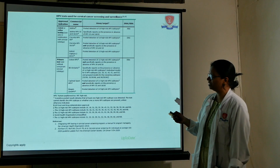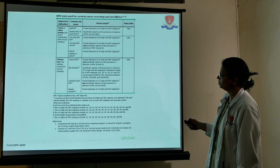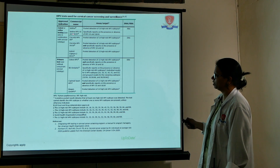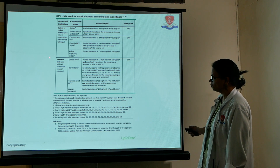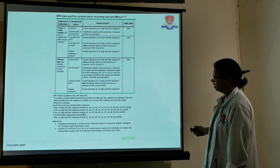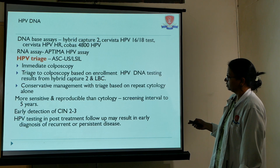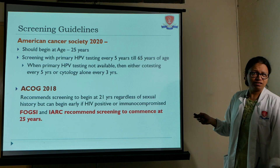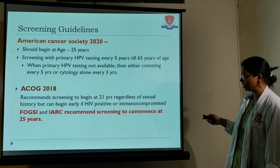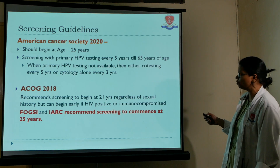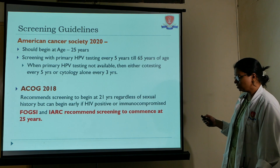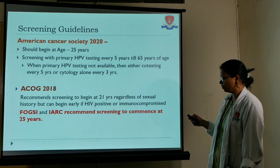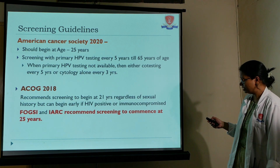HPV testing includes self-testing and co-testing (HPV combined with cervical cytology). Commercial tests include Aptima, Cobas, Cervista, and Hybrid Capture 2. Primary HPV-only testing includes Cobas HPV and Onclarity HPV. Screening guidelines recommend starting at age 25, every 5 years with primary HPV testing. When unavailable, co-testing every 5 years or cytology alone every 3 years. ACOG 2018 recommends screening from age 21 regardless of sexual history. FIGO and IARC recommend commencing at 25 years.